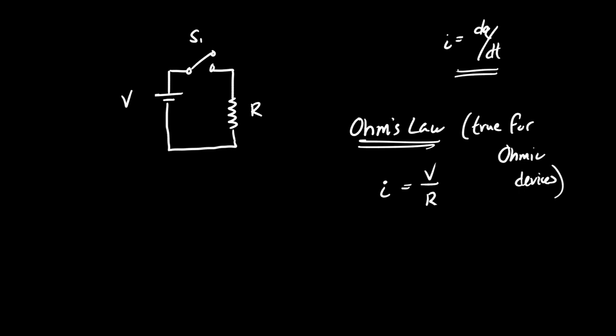All devices that obey Ohm's law only obey it for a limited range. Ohmic devices are ohmic usually for a small range of potential currents. Light bulbs, incandescent light bulbs, they're ohmic. They will obey Ohm's law for a narrow range of currents. The carbon resistors we're going to use, they'll obey Ohm's law for a narrow range of currents. But all ohmic devices will eventually break down. Usually it's because of temperature. The material starts to get hot and its properties start to change.